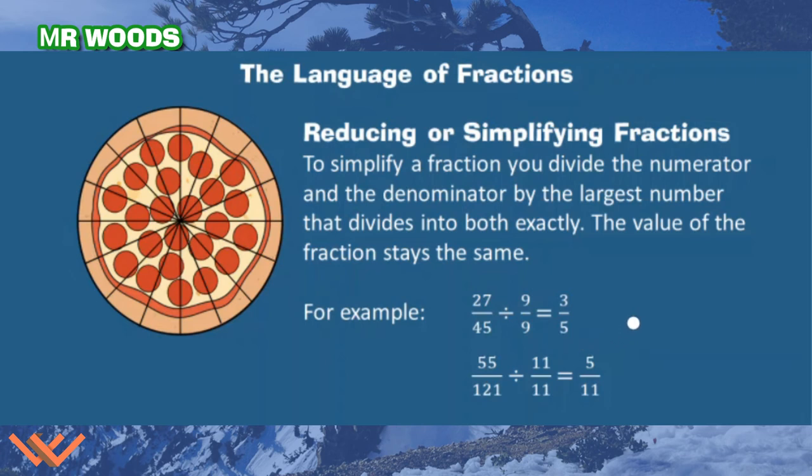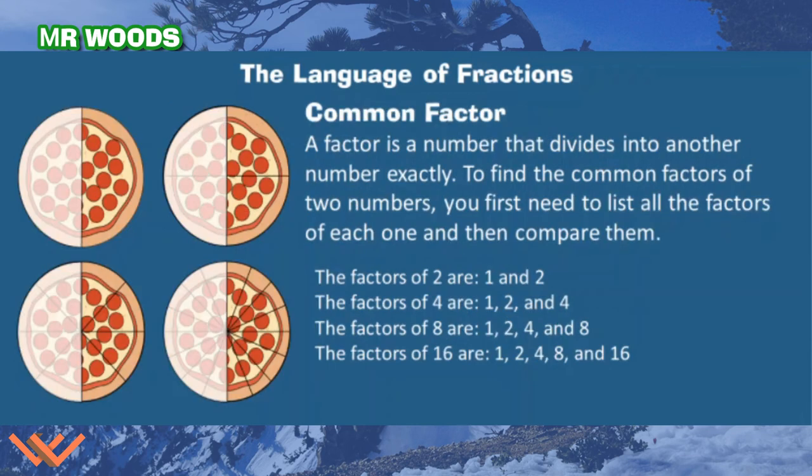Now, what if I had something a little bit larger? Yes, I can still do this. So 55 over 121. So fifty-five one hundred and twenty-firsts divided by 11 over 11. How did I know that? Well, I'm looking at this. I'm going, okay, this is a factor for both of these numbers. What's a factor? Here's a factor. So we're looking for a common factor. A factor is a number that divides into another number exactly.